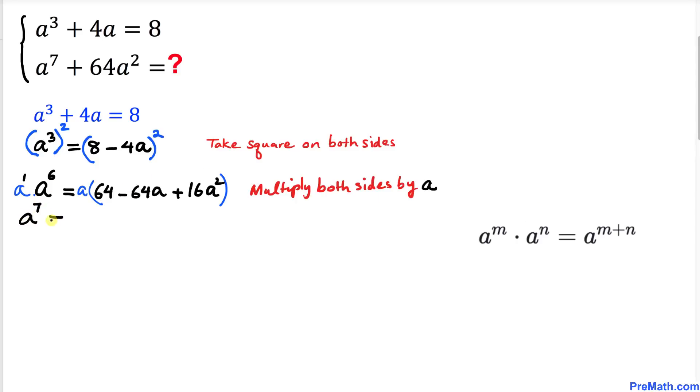And on the right-hand side, let's distribute, so we are going to get 64a - 64a² + 16a³. Now let's move this -64a² to the left-hand side, so we get a⁷ + 64a² equals, and on the right-hand side I can write 16a³ + 64a.